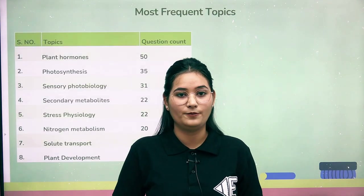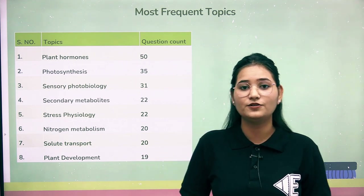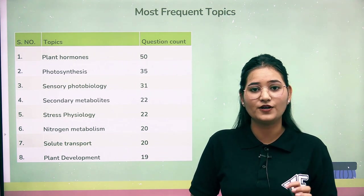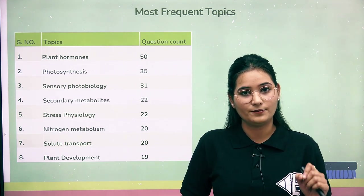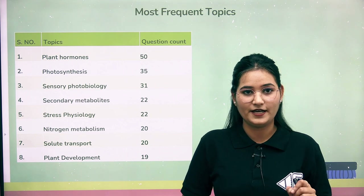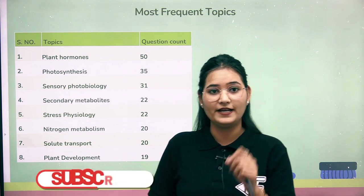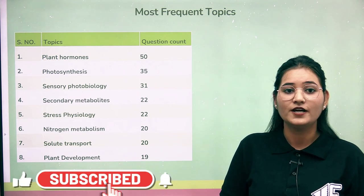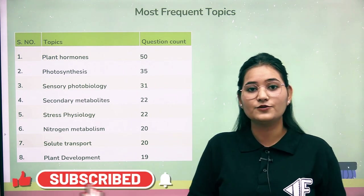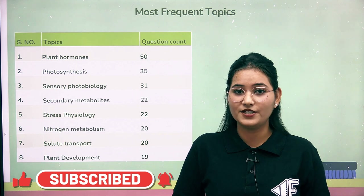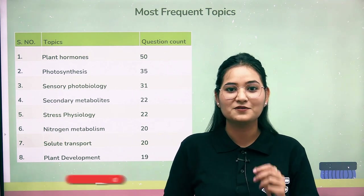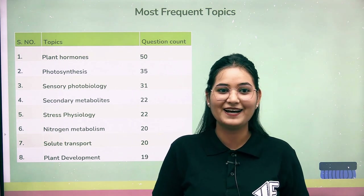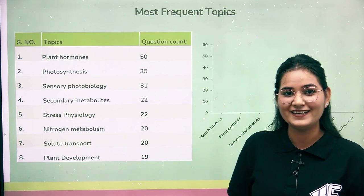Now let's look at the most frequent topics. There are 8 topics in the high-frequency category. The first and most important is plant hormones — there are 50 questions from plant hormones, which is very significant. So plant hormones should be your first priority to prepare.